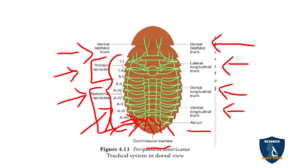This trachea connects with both sides in between, and because of this it is also known as the tracheal system of cockroach.